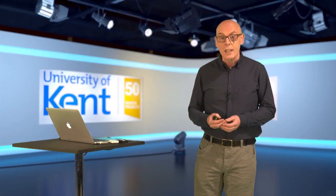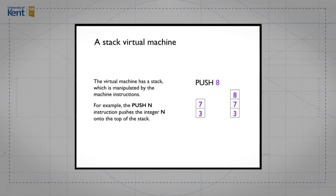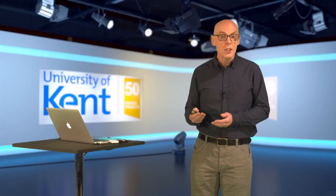The machine we have is a stack virtual machine — it uses a stack to hold intermediate values. The first instruction is to push a value onto the stack. You can see that illustrated in the graphic: if you start with a stack with three and seven, and push eight, then eight appears on top. The second instruction is fetch, which fetches the value of a variable from the environment. So push and fetch both push values onto the stack — either literals or values of variables.